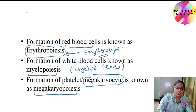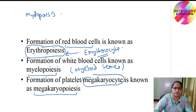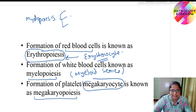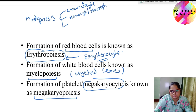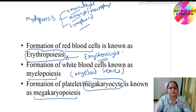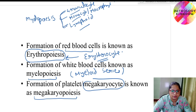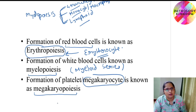Myelopoiesis consists of three series of cells: the granulocyte series, the monocyte-macrophage series, and the lymphoid series. All these arise from a common myeloid progenitor.